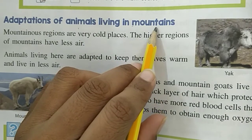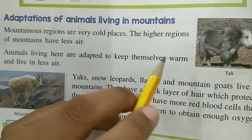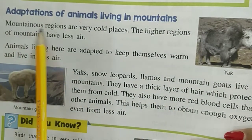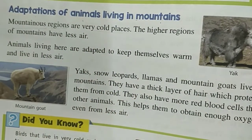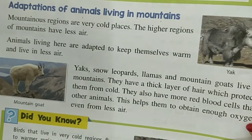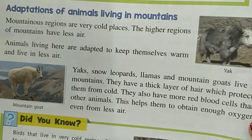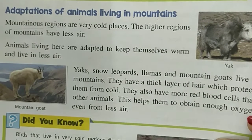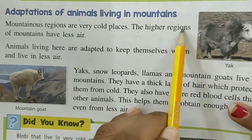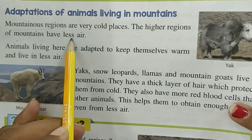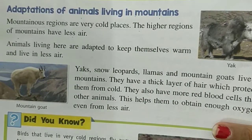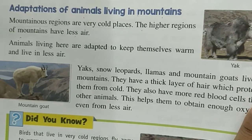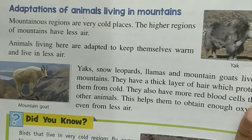Aisi habits — animals ki jo mountains par live karte hain. Mountain regions are very cold places. Jo mountain regions hote hain, jahan par pahad hote hain, woh region kaisi hoti hai? Thandi, thandi jaga ki region hoti hai, jaise ki Himalaya. Himalaya kya hai? A cold region hai. The higher regions of mountains have less air — jaise Himalaya hai, Mount Everest hai, aise area hai — vahapar thand hone ki wajah se kabhi-kabhi barff bhi girti hai, aur vahapar kam amount mein air hoti hai.